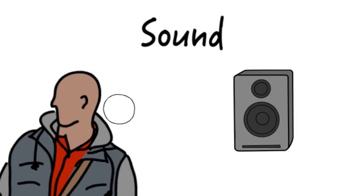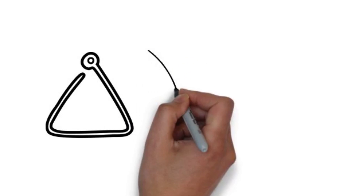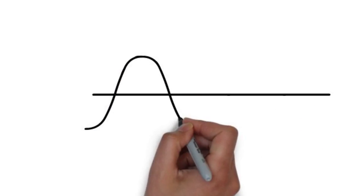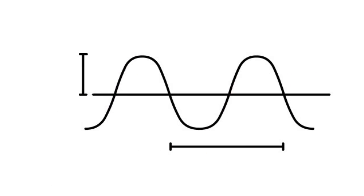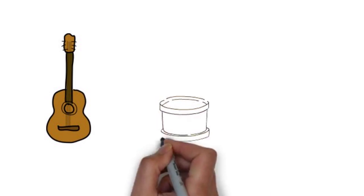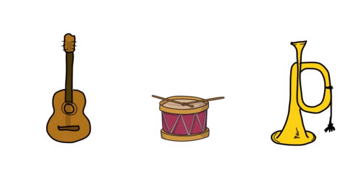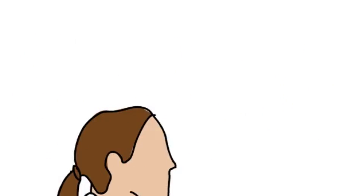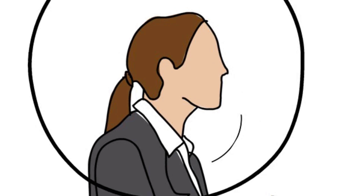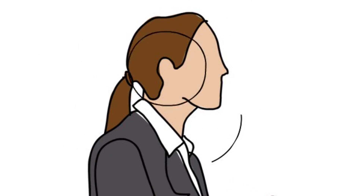Sound is a form of energy that can be heard. It is a transfer of energy in the form of waves produced from rapidly vibrating particles in a given substance. The amplitude, or size of a wave, determines how high a sound is. The frequency at which a wave is emitted determines its pitch. There are different types of musical instruments, such as string, percussion, and wind instruments that sound when vibrations are produced in them. We're able to speak because our vocal cords vibrate inside our throat. We can hear sound when our ears capture incoming sound waves.